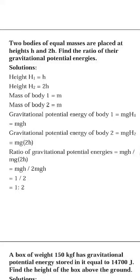We'll continue the chapter. So what did we study till now? The formula to find work is F·s·cos θ. The formula to find potential energy is mgh, kinetic energy is half mv², and power is work upon time, or you can say energy upon time.